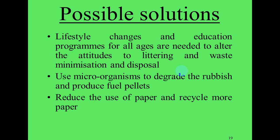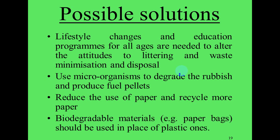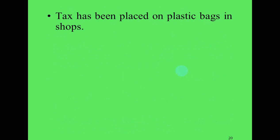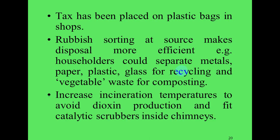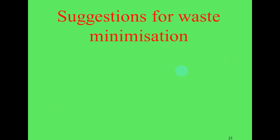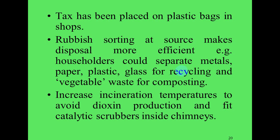Despite these problems, we are working toward the best possible solutions for waste management. Lifestyle changes and education programs for all ages are needed to alter attitudes to littering and waste minimization. We should use microorganisms to degrade rubbish and produce fuel pellets, reduce and recycle paper, and use biodegradable materials such as paper bags in place of plastic. Taxes have been placed on plastic bags. Rubbish sorting at source makes disposal more efficient — for example, householders separating metal, paper, plastic, glass for recycling, and vegetable waste for composting. Incineration temperatures should be increased to avoid dioxin production, with catalysts fitted inside chimneys.